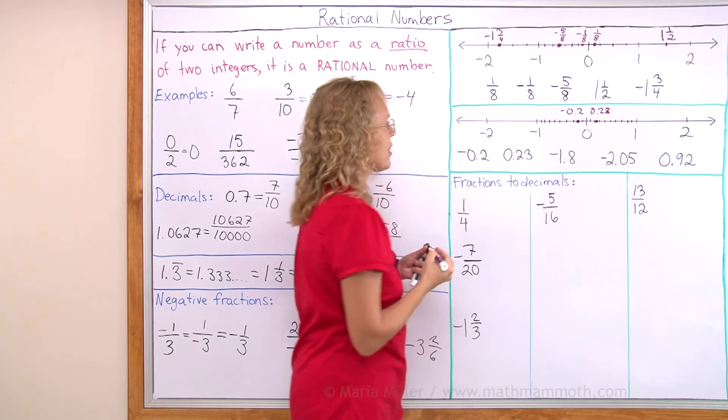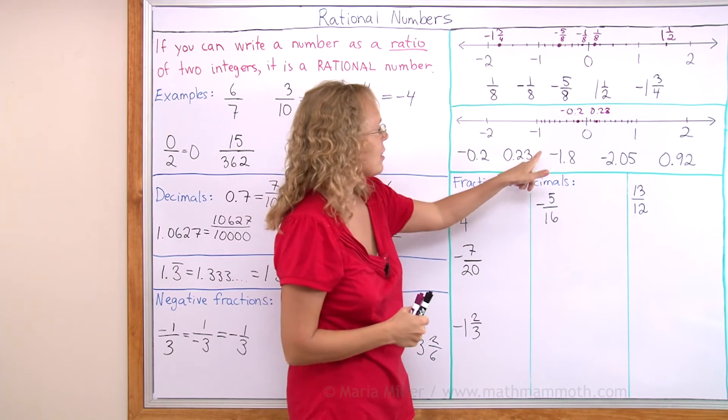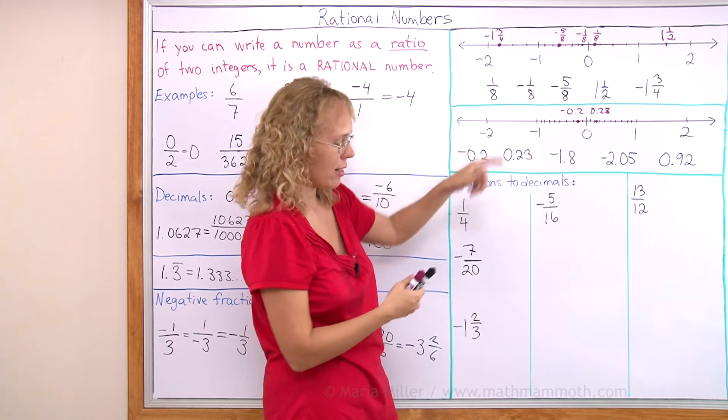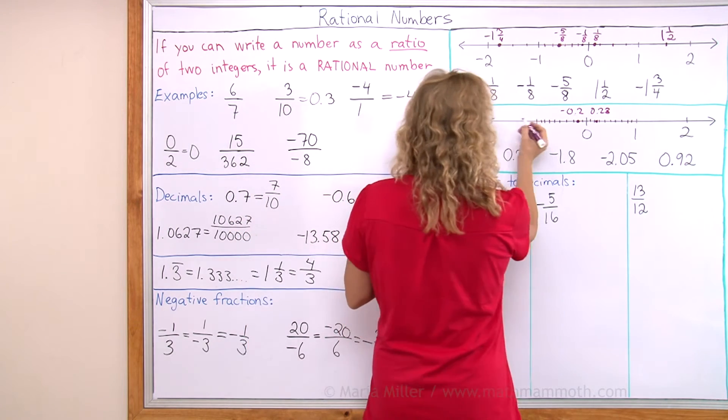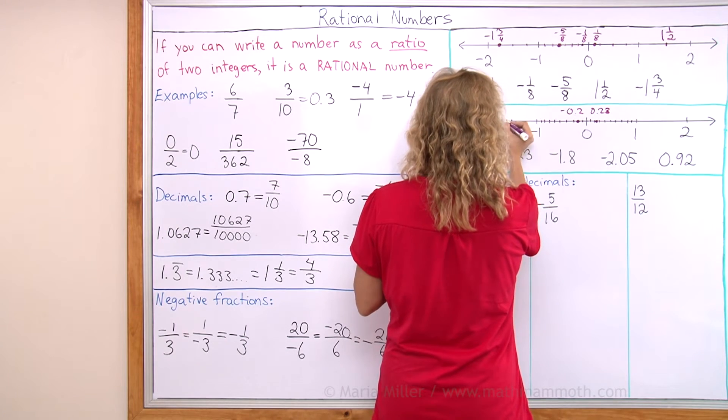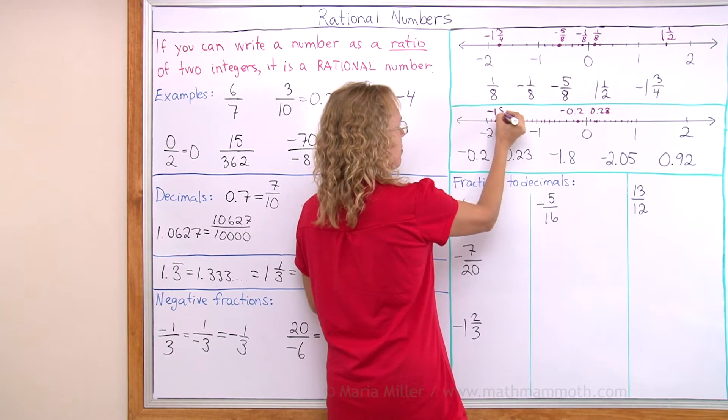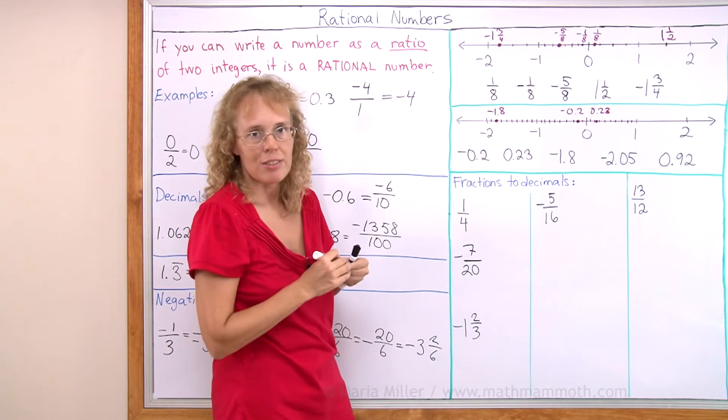Negative 1.8. Okay, that I would go to negative 1 and then 8/10 further, somewhere there. Okay, you would again divide this into 10 parts first, then go to the 8th tenth here. It's near negative 2.